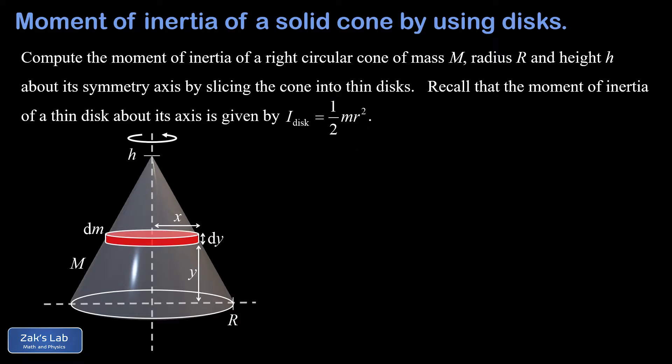This infinitesimally thin disk has a mass given by the infinitesimal quantity dm. Before we set up the integral, we need a small note on density. Density, notated by the Greek letter rho, is mass divided by volume, or equivalently mass equals density times volume. This is true for the entire cone but also for our thin disk, so dm equals rho times the infinitesimal volume dV.